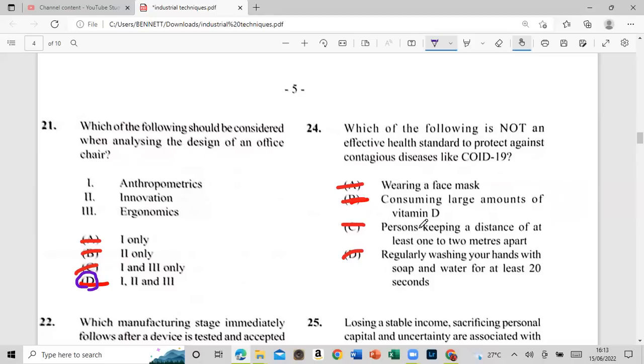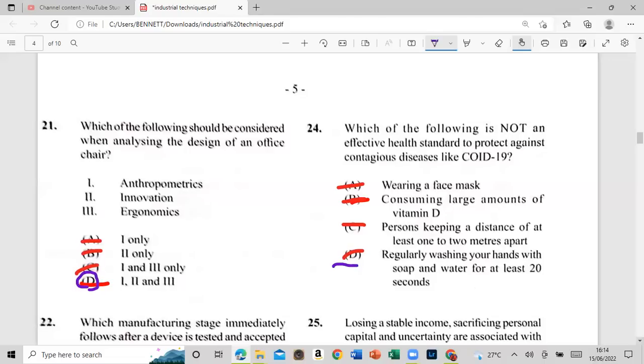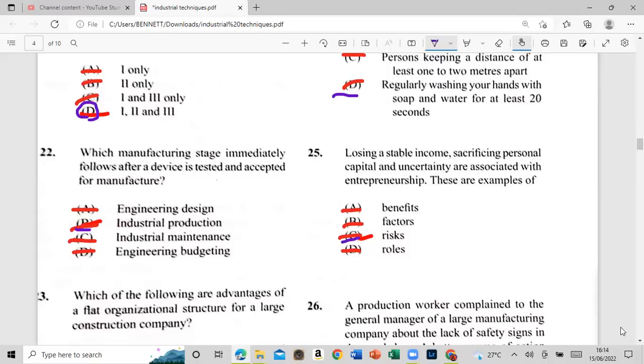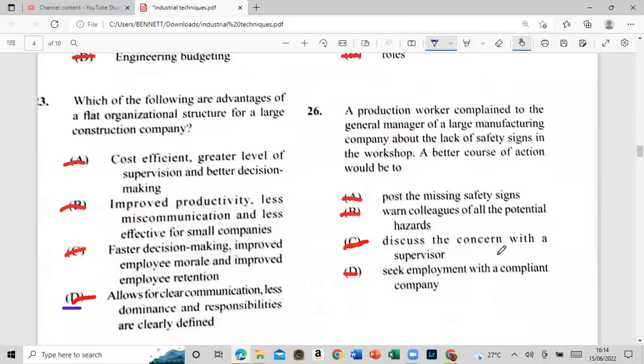24: which of the following is not an effective health standard to protect against contagious disease like wearing a mask, consuming large amounts of vitamin D, C, person sleeping distance at least one or two meter bar three, regular washing your hands with soup and water for less than 20 seconds? What is this choice? So somebody can wash them on in less than 20 seconds. Anyway, the 25: losing a stable income, one more sacrifice in personal capital and uncertainty are associated with entire finishing. These are example of, is it a benefit, factors, risk, or rule? As everybody's supposed to look at that. Type in answer, guys, which I'm telling to go on to type in. And I'm going to see how many are you going to get them.